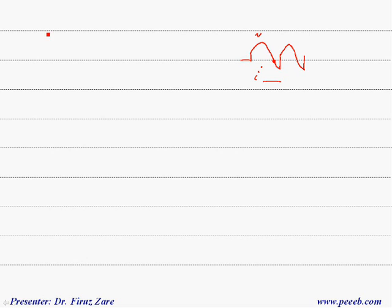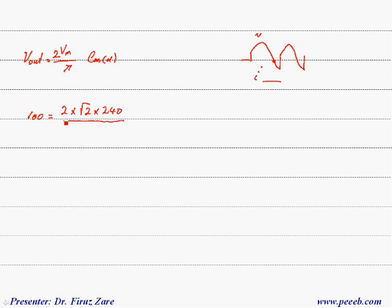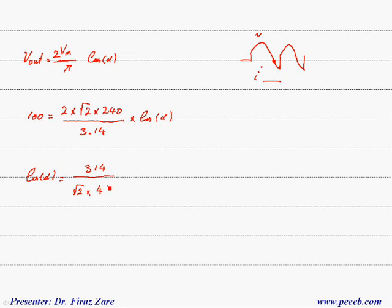For the inductive load case we have a different equation. The output voltage equals the maximum value over pi — because this is a full wave rectifier — so we have 2Vm over pi times cosine alpha. The first voltage level, 100 volts, equals 2 times root of 2 times 240 over 3.14 times cosine alpha. Again, cosine alpha equals 314 divided by root of 2 times 480.